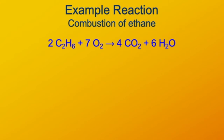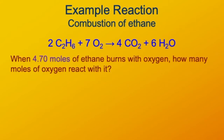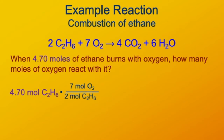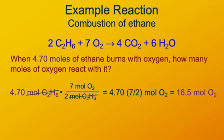If we start with 4.7 moles of ethane and burn it with oxygen, how many moles of oxygen are equivalent to those 4.7 moles of ethane? We see that the equivalence in this reaction is 7 moles of oxygen for every 2 moles of ethane. The moles of ethane cancel out, and we're left with moles of oxygen. The calculation is 4.70 times 7 over 2, giving us 16.5 moles of oxygen.